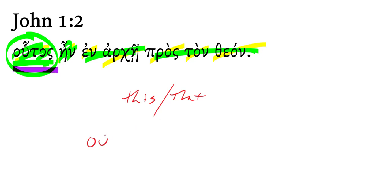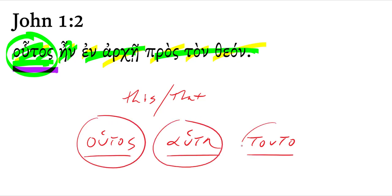So in Greek, Hutas, Haute, Tuta, right? This is the masculine, the feminine, the neuter. This, this, this, or the far demonstrative, ekenos, that.